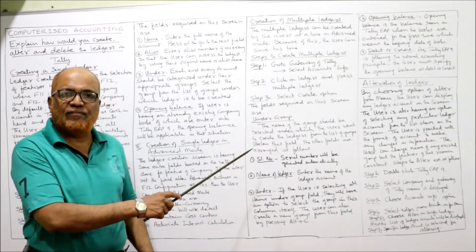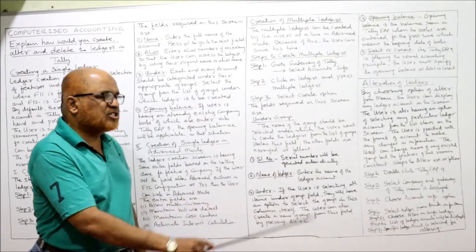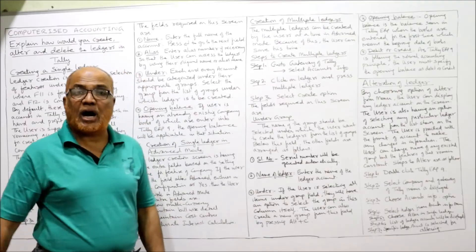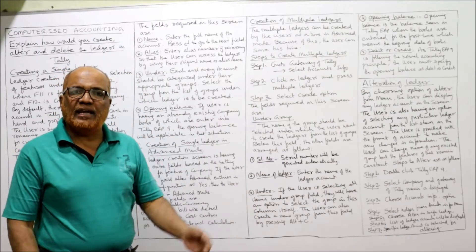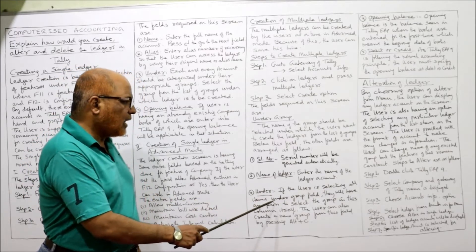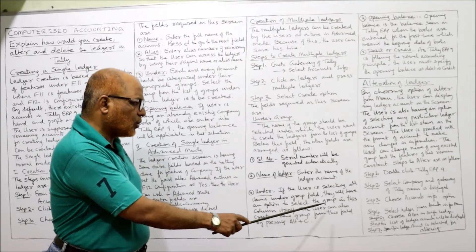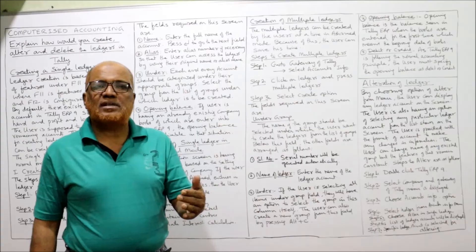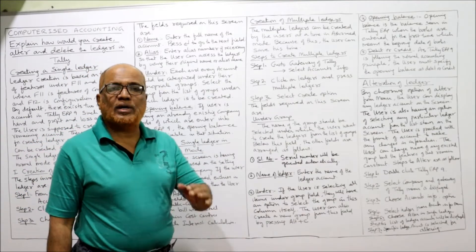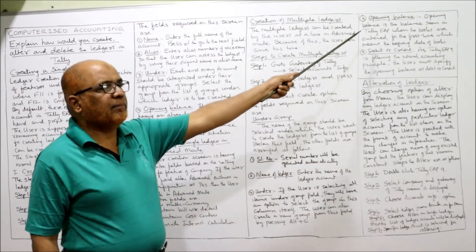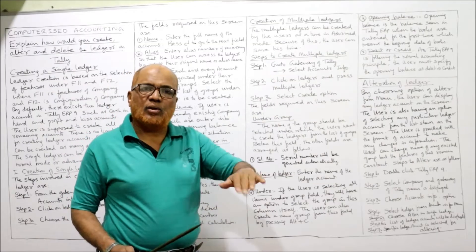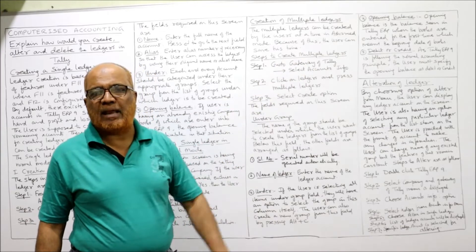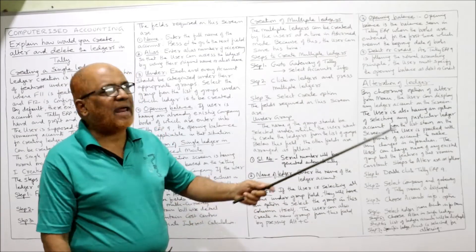After selecting the group, the next fields are arranged as follows: serial number, which will be generated automatically; name of the ledger — enter the name of the ledger account; and Under — if the user selects 'All Items' under the group field, they will have an option to select the group in this column. The user can also create a new group by pressing Alt+C. Then Opening Balance — if there is an opening balance, enter the amount.